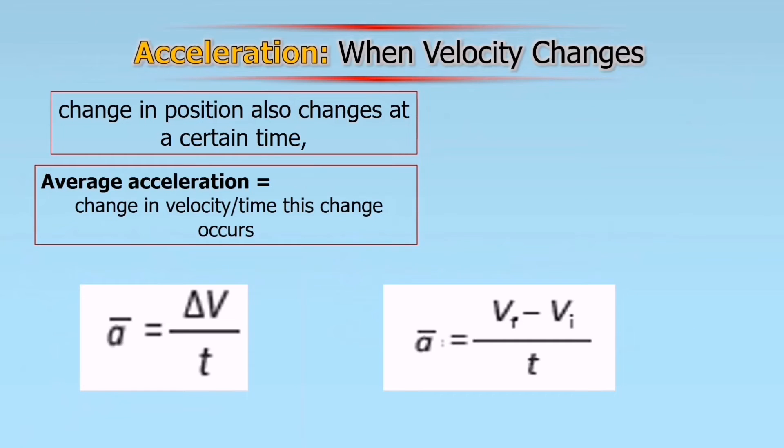How about acceleration? It is when velocity changes. What is velocity again? Velocity is the direction given together with speed. If the speed or direction changes, what are you going to do? Use the formula: change in velocity over time change occurs. When you see the triangle, it means change. Change velocity over time. To get it, velocity final minus velocity initial over time.